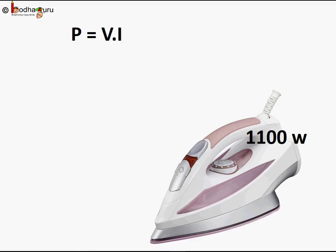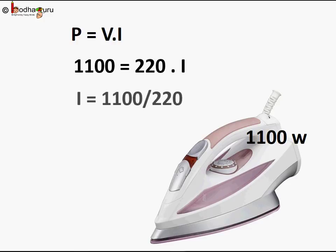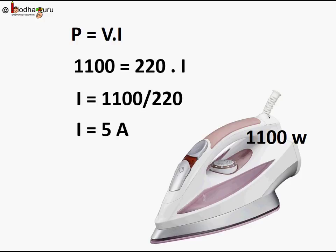Say an iron uses 1100 watt power. So how much current will it draw? P equal to V into I, so 1100 watts equal to 220 volts into I. So I will be equal to 1100 by 220 which is equal to 5 amps. So small circuits that we use to run TV, fan etc are 5 ampere socket and iron will work there.